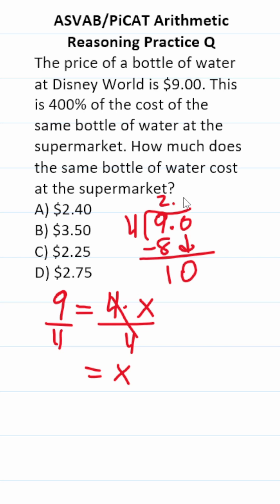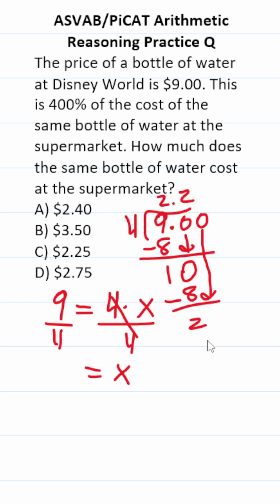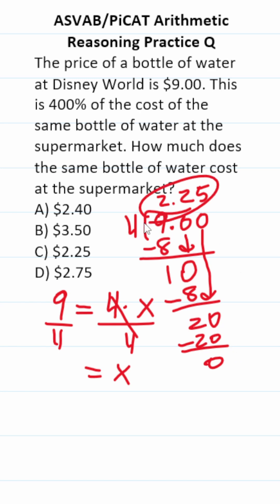4 goes into 10 two times without going over. 4 times 2 is 8, giving us 2. Add another zero placeholder and drop it down. 4 times 5 is 20, so there is no remainder and we can stop. So the cost of that bottle of water in the supermarket is $2.25.